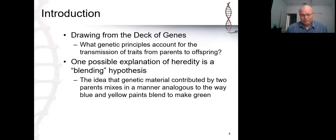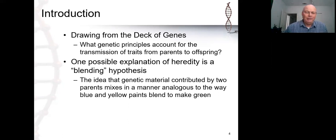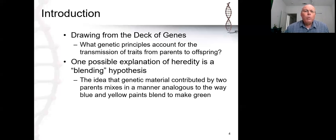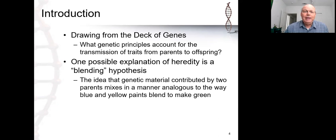The classic example of blending was snapdragons: breeding a red-flowered plant with a white-flowered plant produces pink flowers in the next generation. Geneticists of Mendel's time said, 'See — blending. You mix red and white, you get pink.' What they failed to do was what Mendel would do: take some of those pink flowers and breed them together. Because if they had done that, they would have realized that blending was probably not the best explanation — though at the time, it was the accepted one.